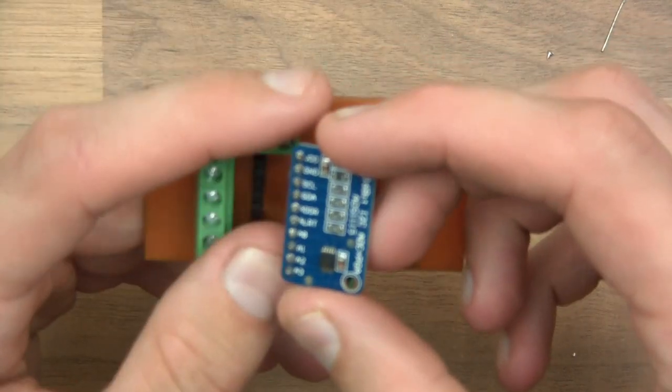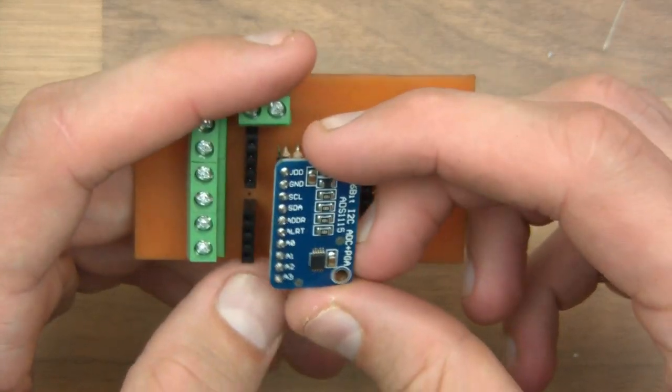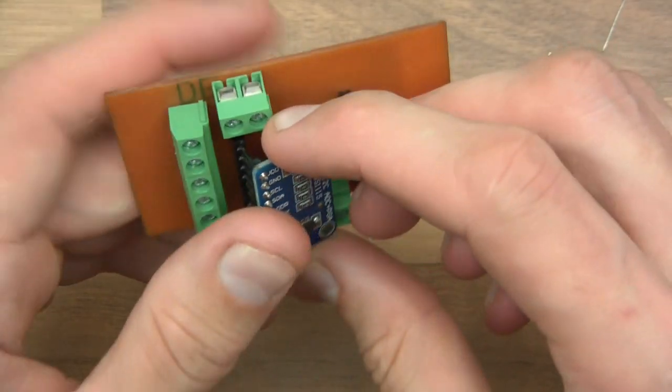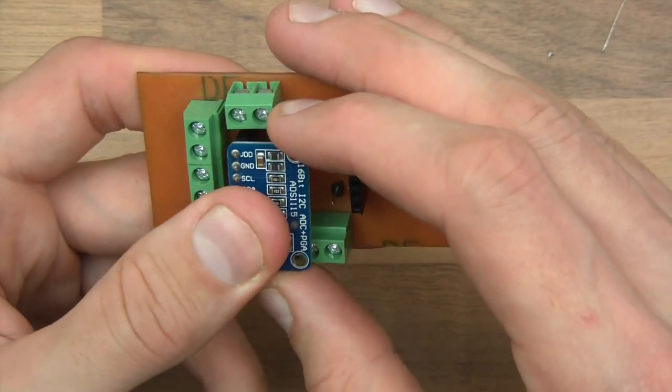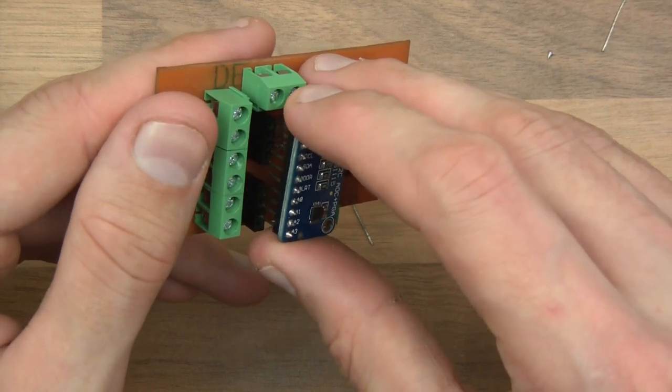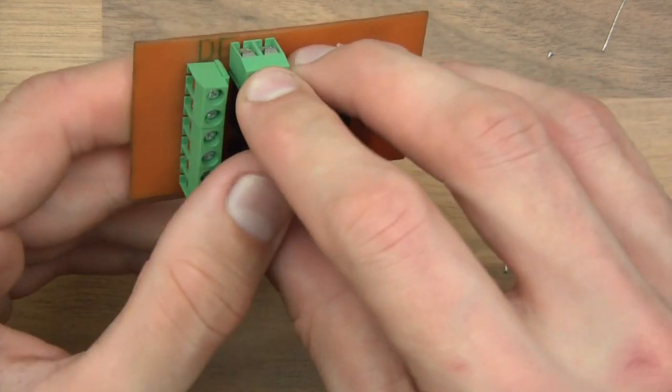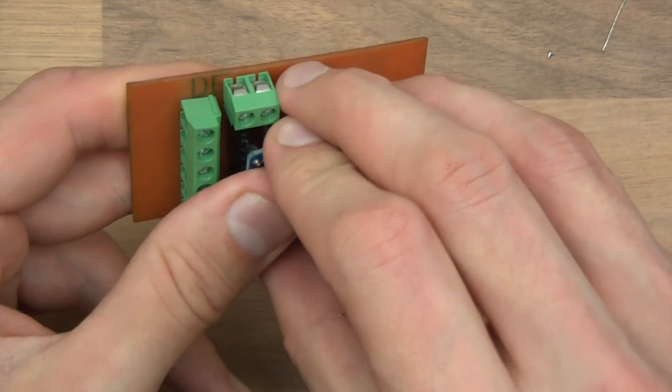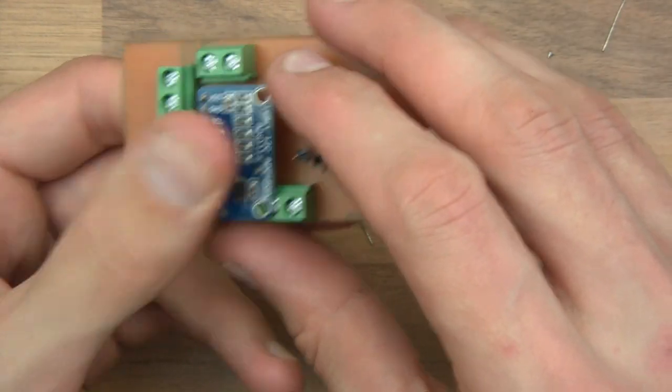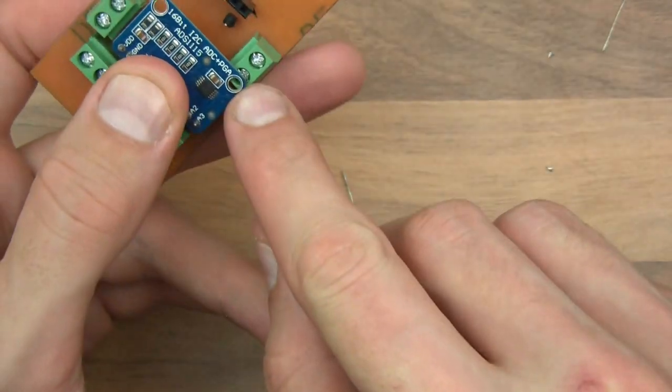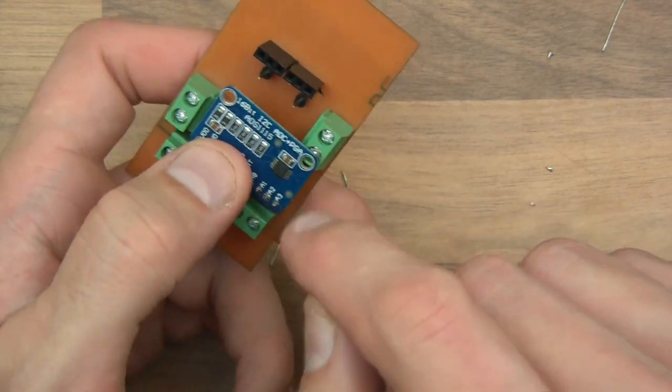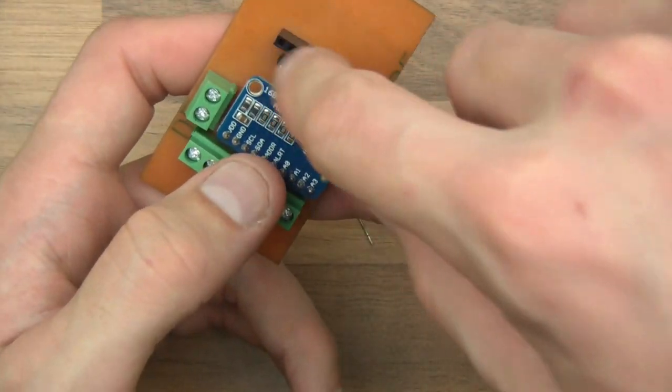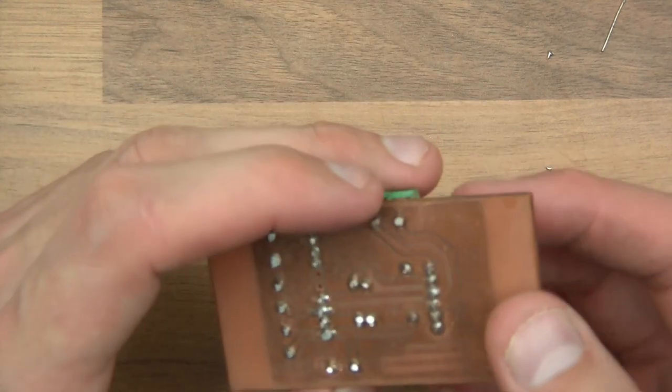I've got these sensors here and this is an ADS1115 which is a high precision ADC basically with a programmable gain. You can see that I've made a bit of a mistake there. So I'll have to put the wire on and then put this on after. I need a jumper wire there.